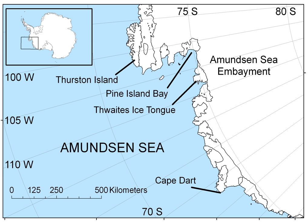The Amundsen Sea, an arm of the Southern Ocean off Marie Byrd Land in western Antarctica, lies between Cape Flying Fish to the east and Cape Dart on Seipel Island to the west. Cape Flying Fish marks the boundary between the Amundsen Sea and the Bellingshausen Sea. West of Cape Dart there is no named marginal sea of the Southern Ocean between the Amundsen and Ross Seas.